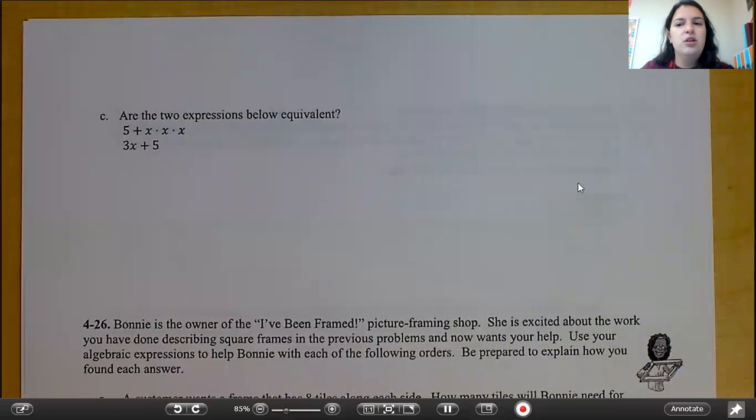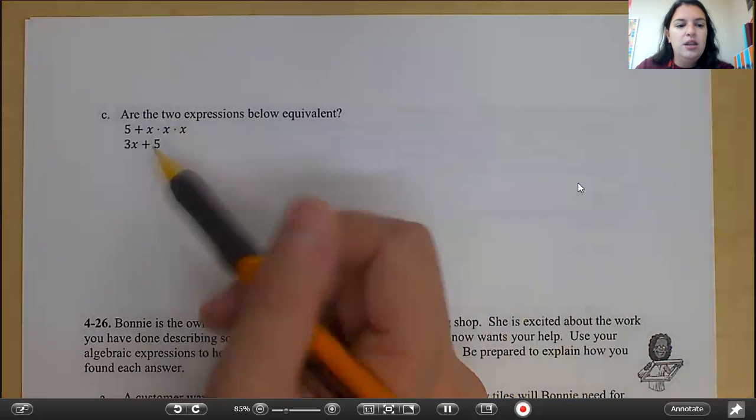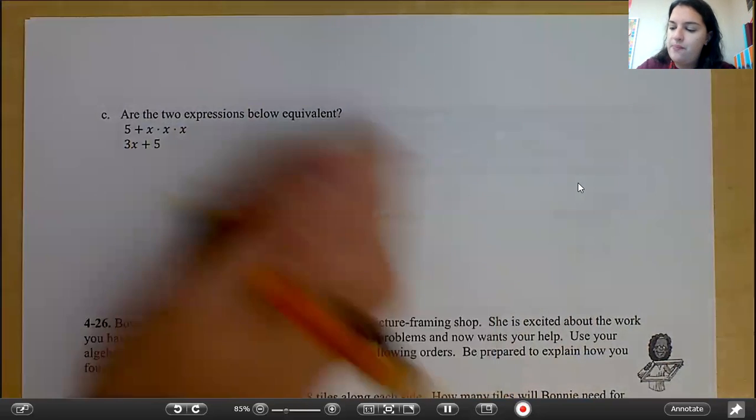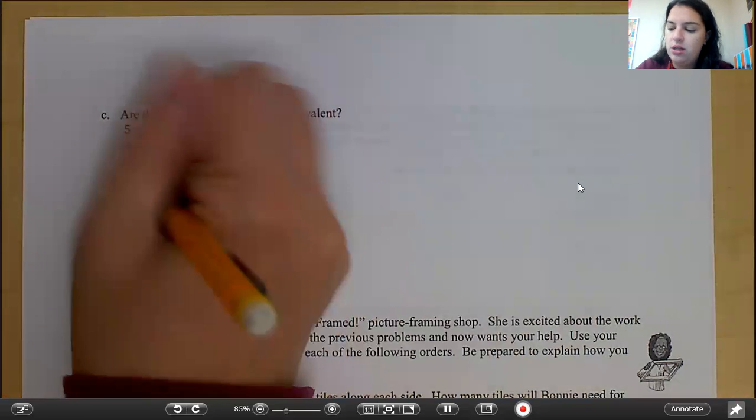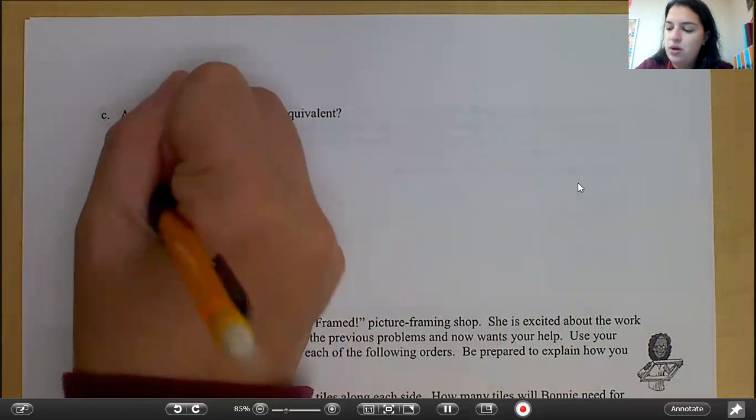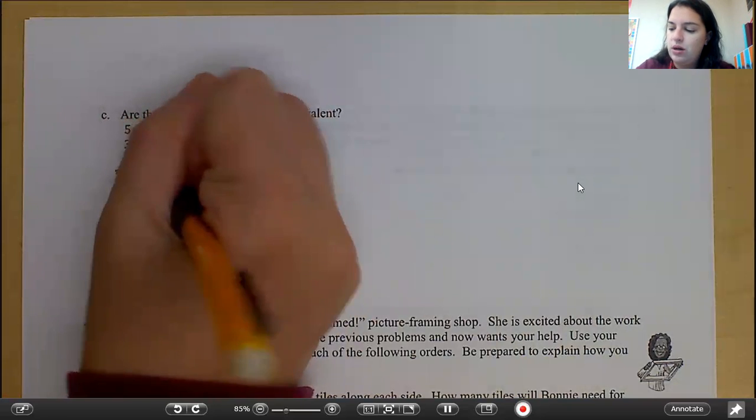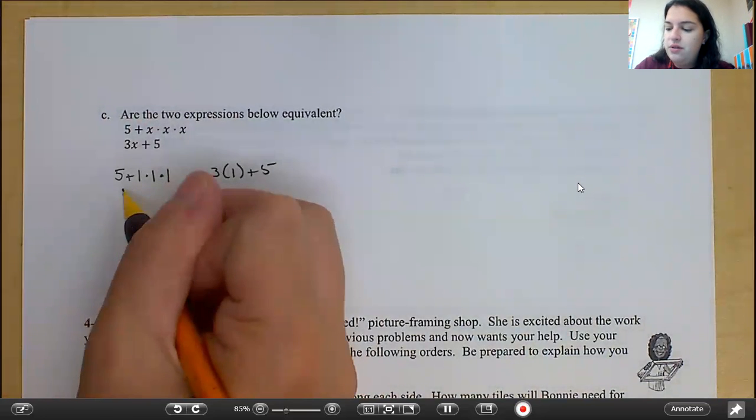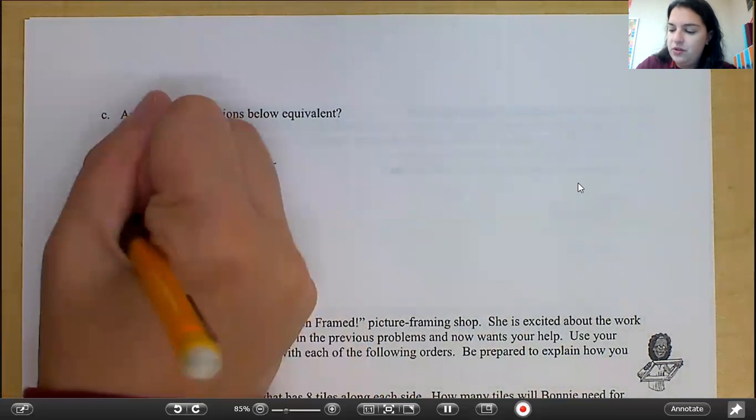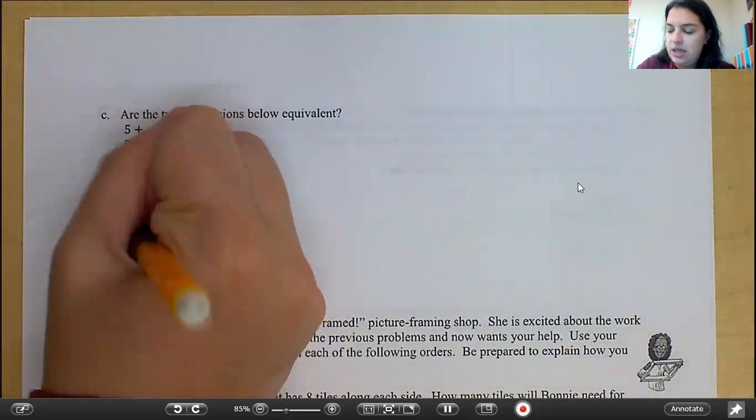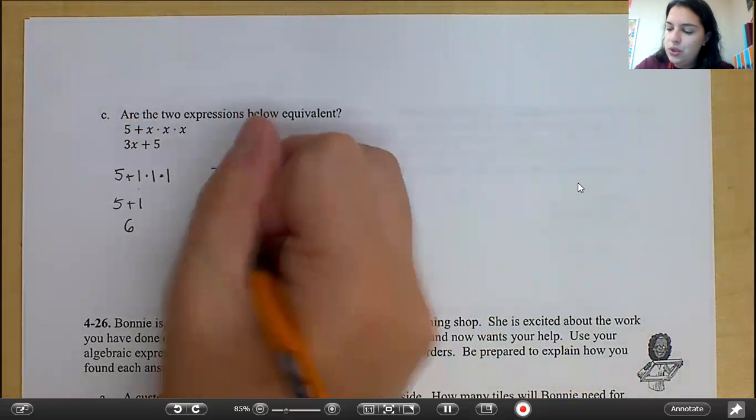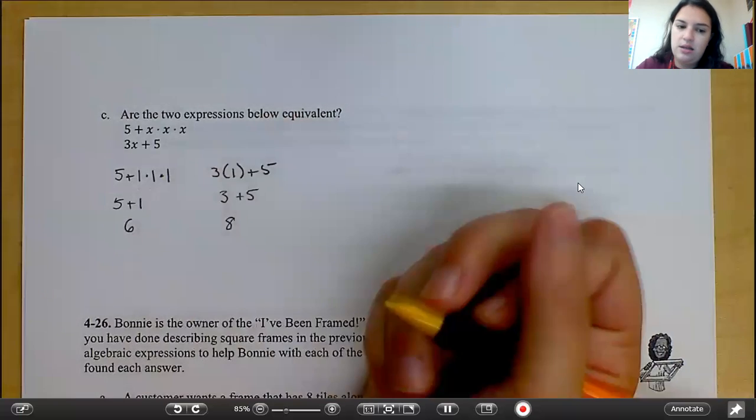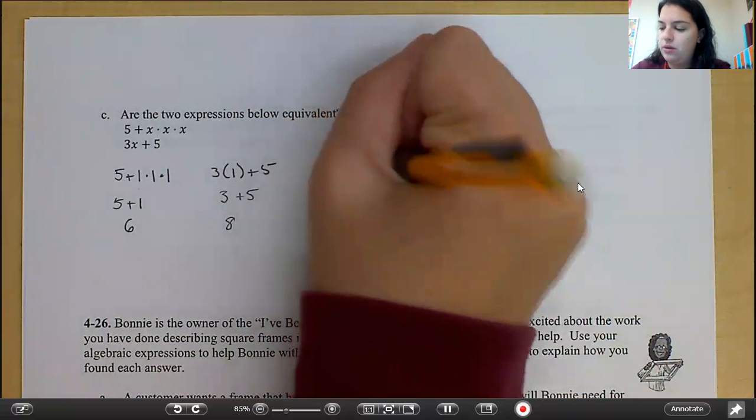Okay, this one's a little more tricky. You need to just substitute values in for x to see if they're equivalent. So, for example, if I wanted to make my x's 1's, I would have 5 plus 1 times 1 times 1 and 3 times 1 plus 5. 5, 1 times 1 times 1 is 1. So 5 plus 1 is 6. 3 times 1 is 3 plus 5. That would be 8. Therefore, these are not equivalent.